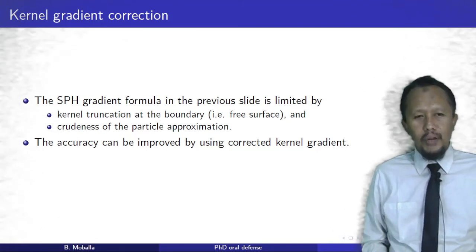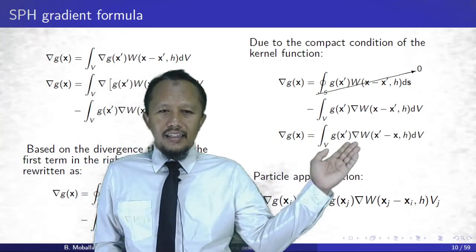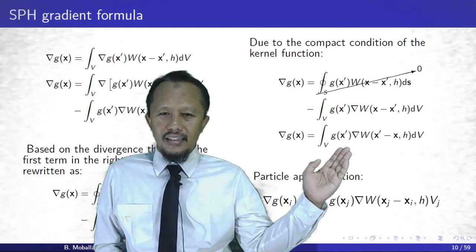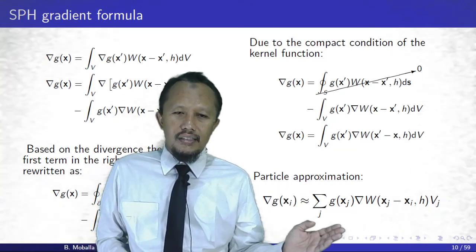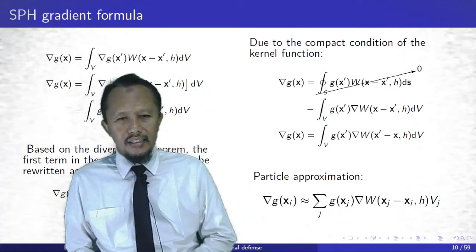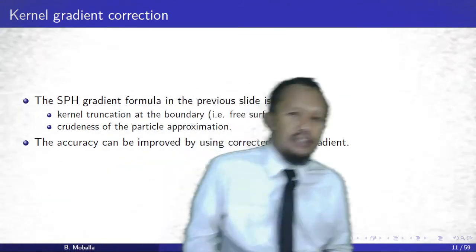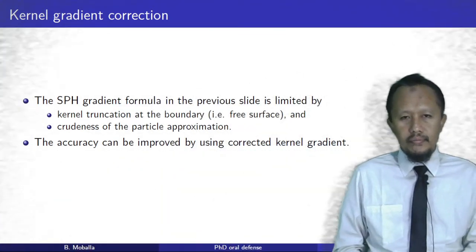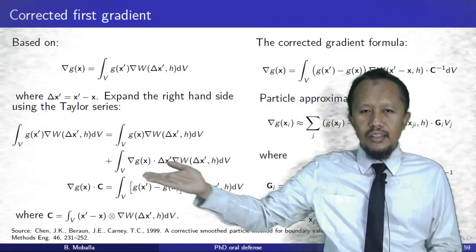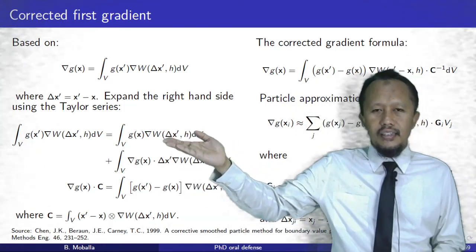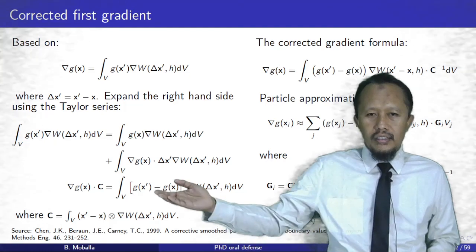There is a problem with this gradient equation. In the continuous sense, the sum of the kernel gradient equals zero. But when we discretize the domain into particles and turn the integral into a summation, the sum of the kernel gradient is not zero, introducing error into the calculation. To remedy this, we use the so-called kernel gradient correction. Starting from this equation, we expand the right-hand side into a Taylor series, move a term to the left-hand side, and rearrange. Because the gradient is constant over neighboring points, we can factor it out, yielding a correction term that is a tensor product of the relative distance and the gradient of the kernel function.